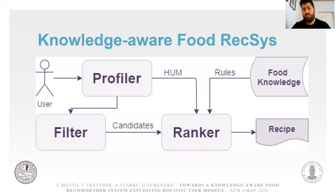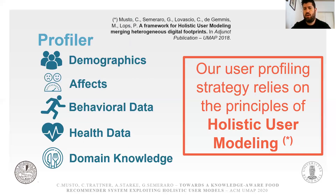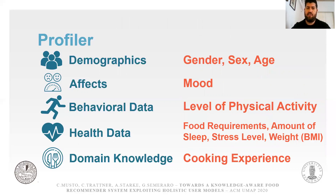This is our methodology. Here you can see the workflow we carried out. The first model is the profiler model, whose goal is to build a representation of the user. We decided to rely on the principles of holistic user models to build a richer and more comprehensive representation. In particular, we have defined five different groups of user features: demographics, affective data, behavioral data, health data, and domain knowledge. Here you can see a list of the features encoded in our user profiles.